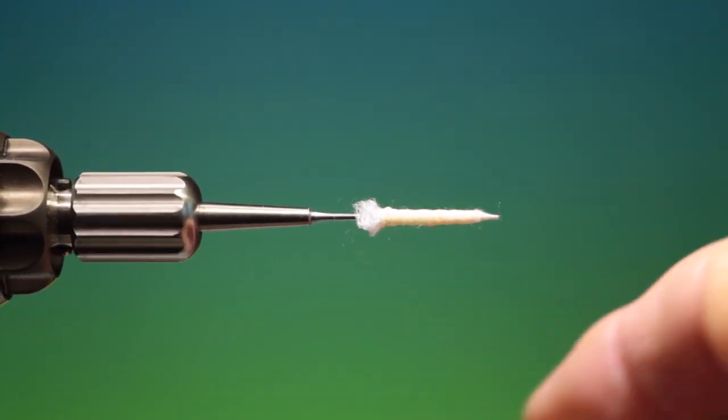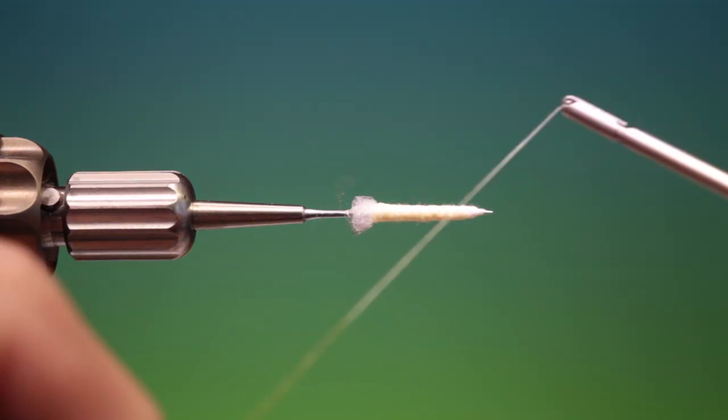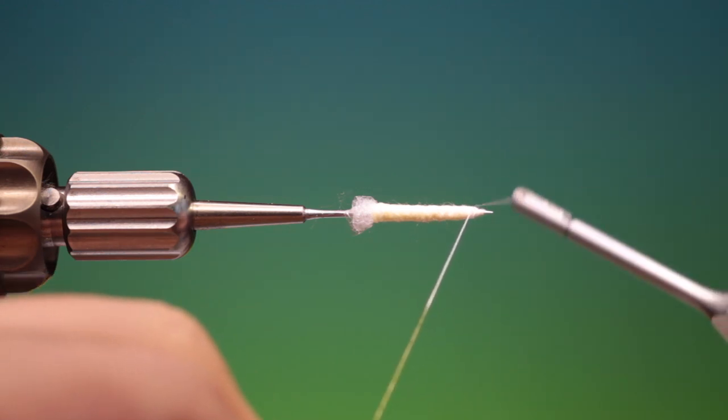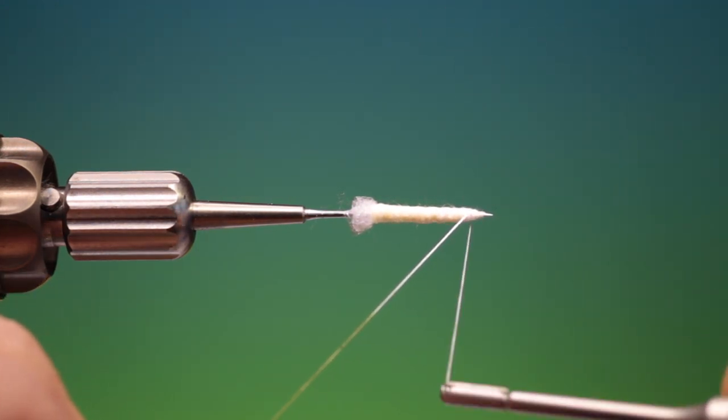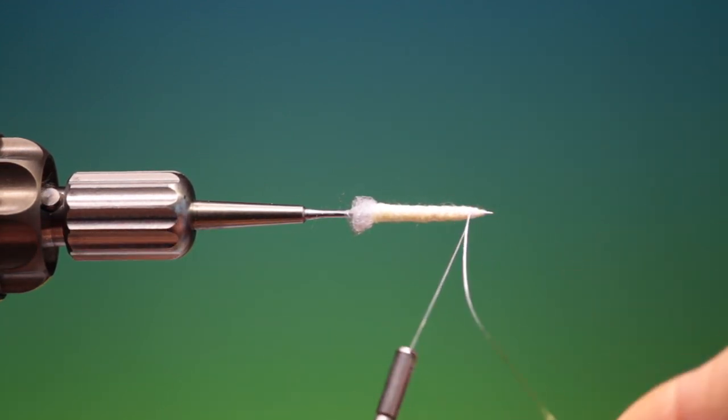And just go over it with a little bit of wax but it's not necessary. What we need now is our tying thread again. Just attach this at the rear of the body and just lock that off.